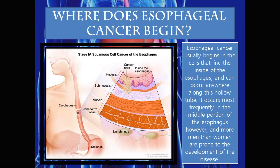Esophageal cancer usually begins in the cells that line the inside of the esophagus and can occur anywhere along this hollow tube. It occurs most frequently in the middle portion of the esophagus, and more men than women are prone to the development of the disease. In the diagram on the left, if we take a cross section through the esophageal tube, this is what the layers of the esophagus would look like. From most interior to most exterior, the innermost layer is called the mucosa, and here you can see the development and growing of the cancer cells.